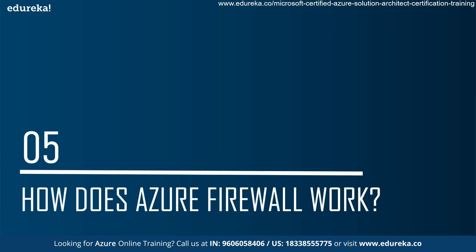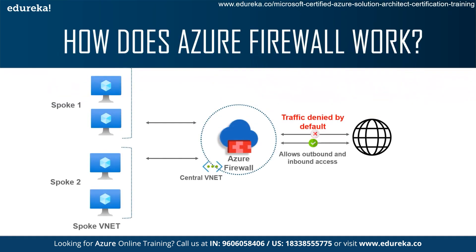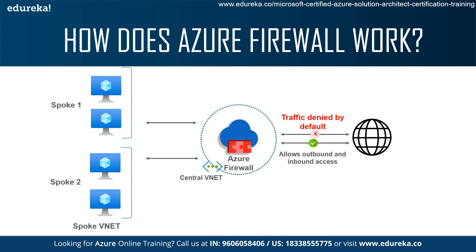Now let us understand how Azure Firewall actually works. Azure Firewall offers enough features to provide optimized control over inbound and outbound network traffic. It eliminates the need for load balancer configuration because of its high availability, and it allows restrictions on outbound traffic by specifying the FQDN service. You can create your own defined rules to filter network traffic based on service IP, destination IP, port, or protocol. These rules show a status of allow or deny. It also enables a threat intelligence feature that can identify malicious IP addresses or irrelevant traffic. Now that we have understood what Azure Firewall is and how it works, let us have a quick demo.